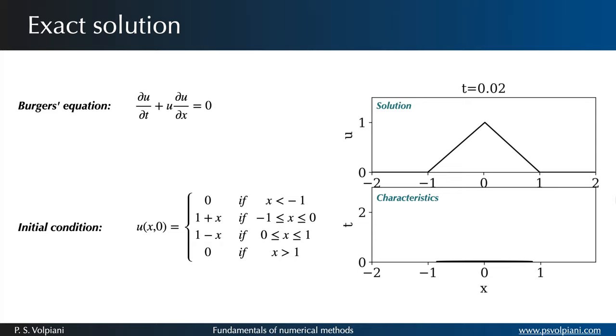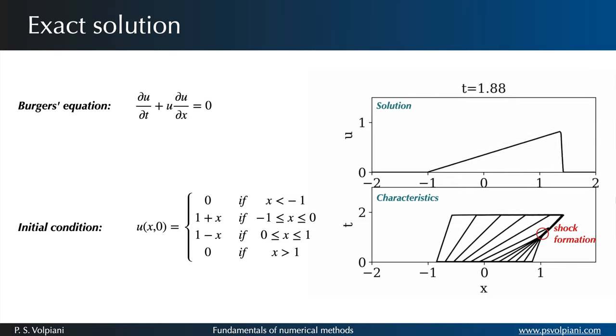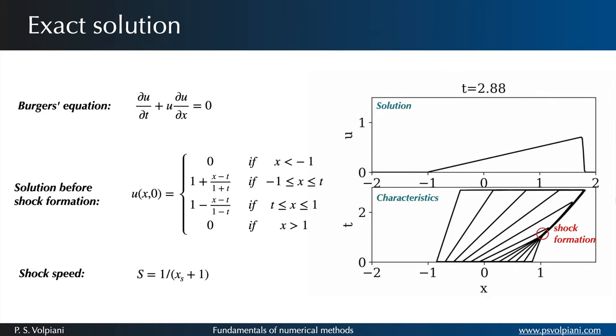In the present case the solution forms a triangle that moves to the right, keeping its maximum value until the formation of a shock at x equals 1. Before the creation of the shock the solution can be written like this. Then at t equals 1 the characteristics intersect each other and a shock is formed. We also saw that using the Rankine-Hugoniot relations we could obtain the shock speed.